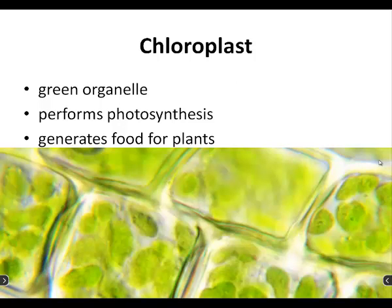Chloroplasts — the name even means green because it's a green organelle. It performs photosynthesis, which is a process whereby plants take in sunlight to generate their own food. So it generates food for the plants. Make sure you have that all on your worksheet — chloroplasts are for plants.